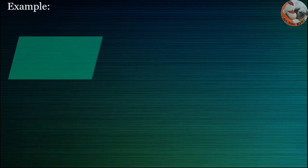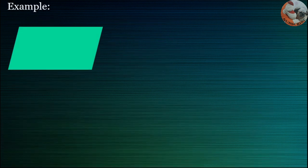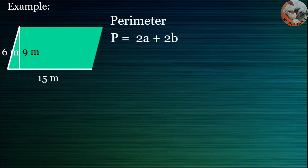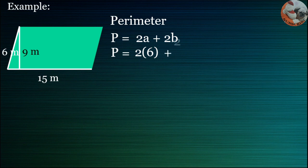Another example: we have a parallelogram with length equals 15 meters, and this side is equal to 6 meters, and the height is 9 meters. To find the perimeter, use the formula P is equal to 2A plus 2B. P is equal to 2 times A which is 6, plus 2 times B which is 15.